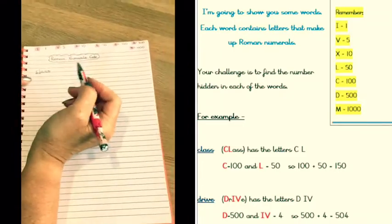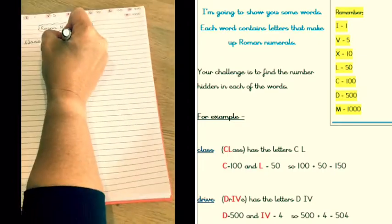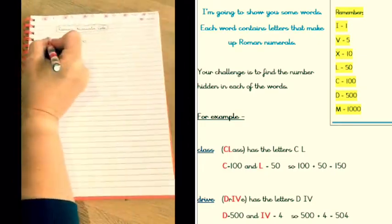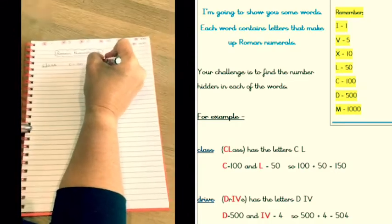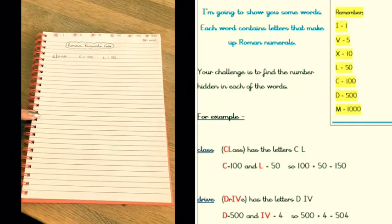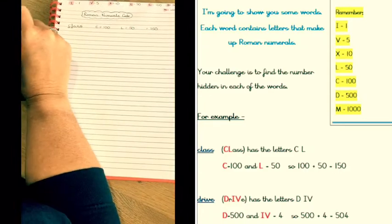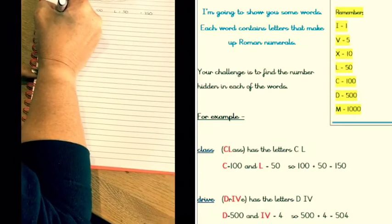A and S aren't Roman numerals. So C equals 100 and L equals 50. I just add those together: 100 plus 50 equals 150. Now let's try the word 'drive.'